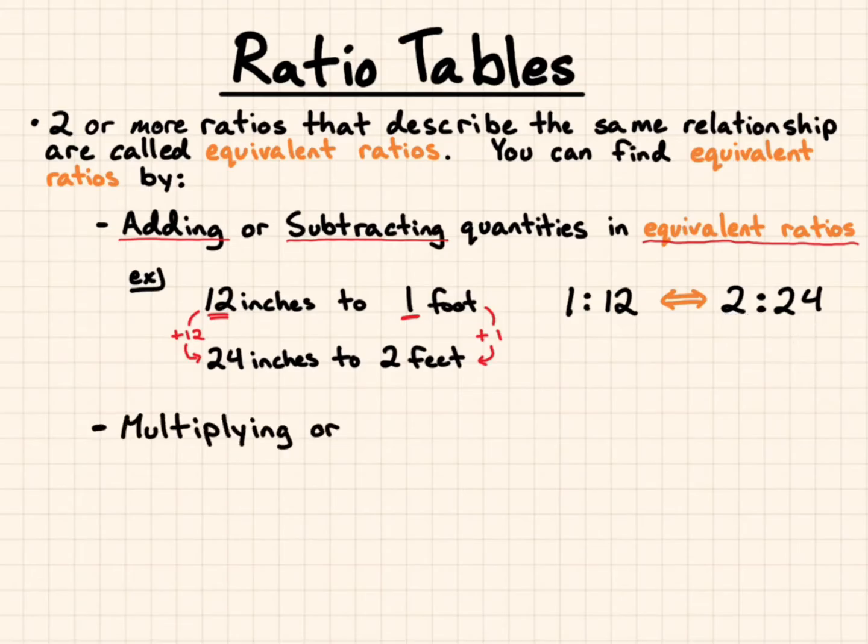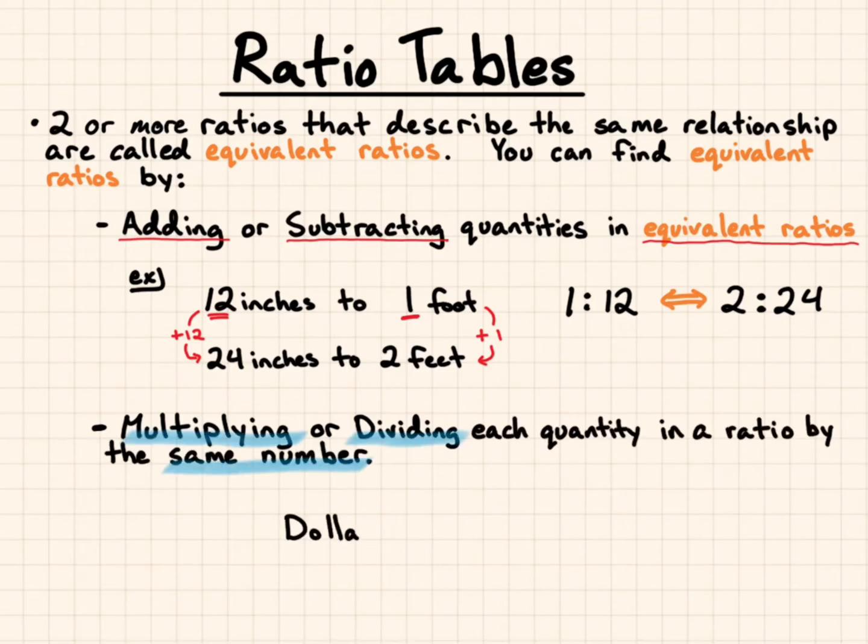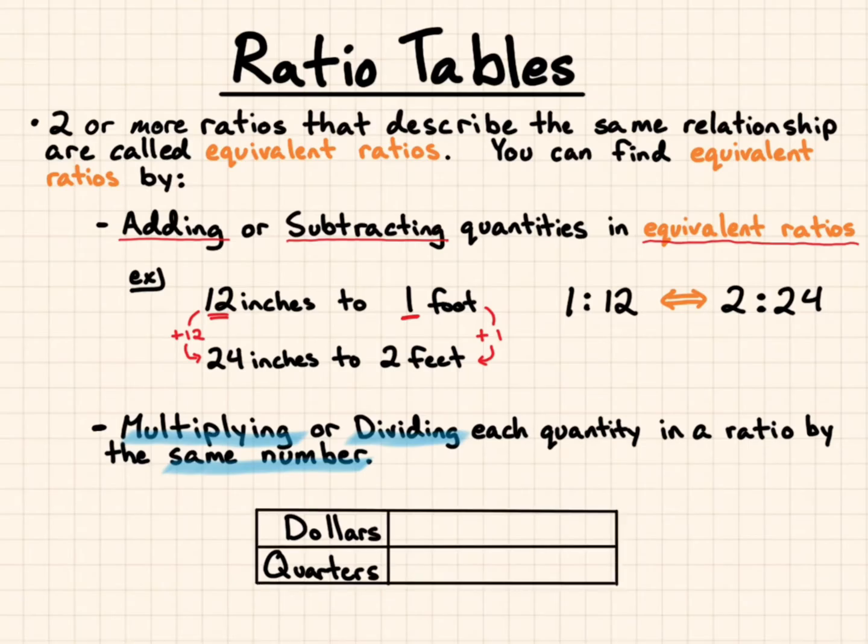Multiplying or dividing each quantity in the ratio by the same number also works. I'm going to highlight this in blue. Let's compare dollars to quarters. There is one dollar for every four quarters. If I multiply the dollars by three, I also have to multiply the quarters by three. There are three dollars for 12 quarters.